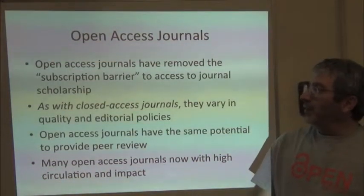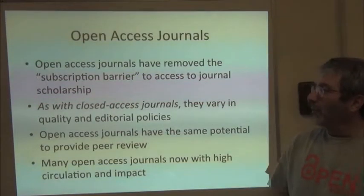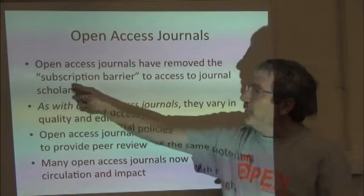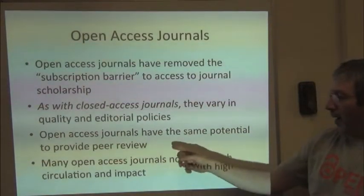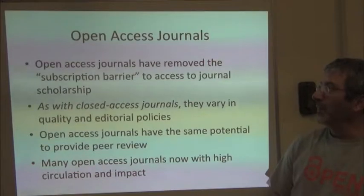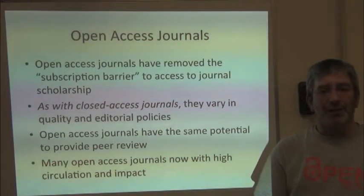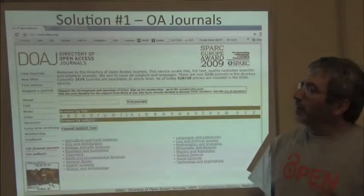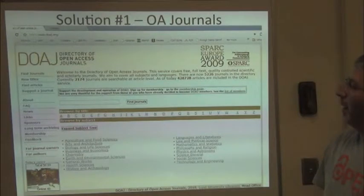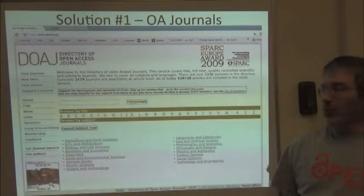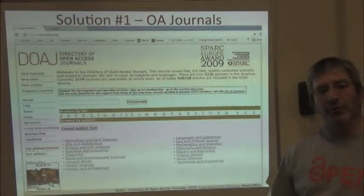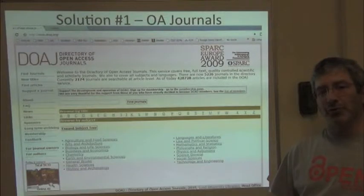Solution number one: publish in completely open access journals — journals that have found some way to cover the costs of access without a subscription barrier. Open access journals increasingly are high-impact journals with high circulation, making this one of the most obvious and ideal solutions. You can go to the Directory of Open Access Journals at www.doaj.org and search for journals with good open access policies in your area.